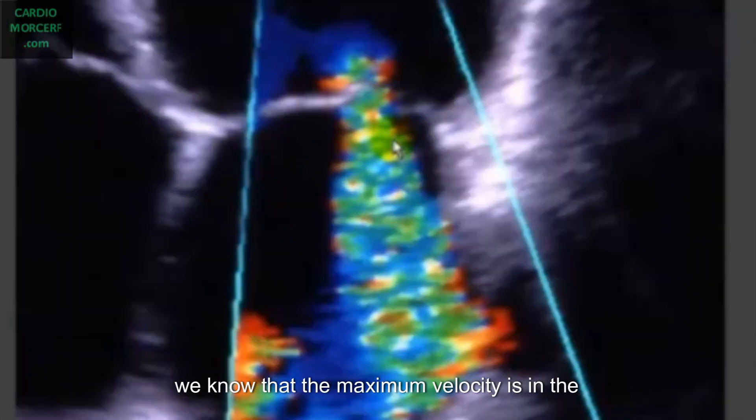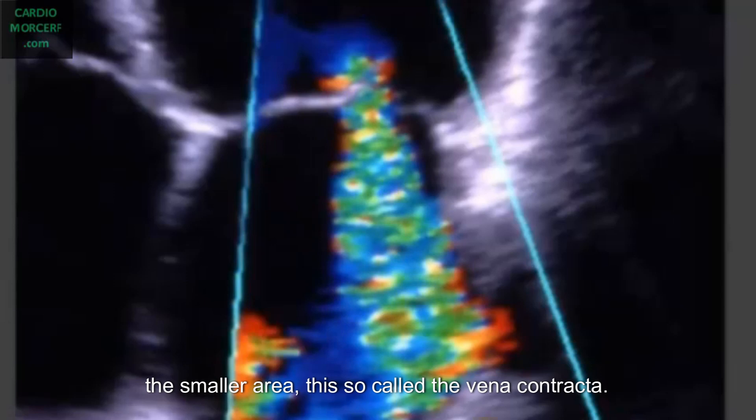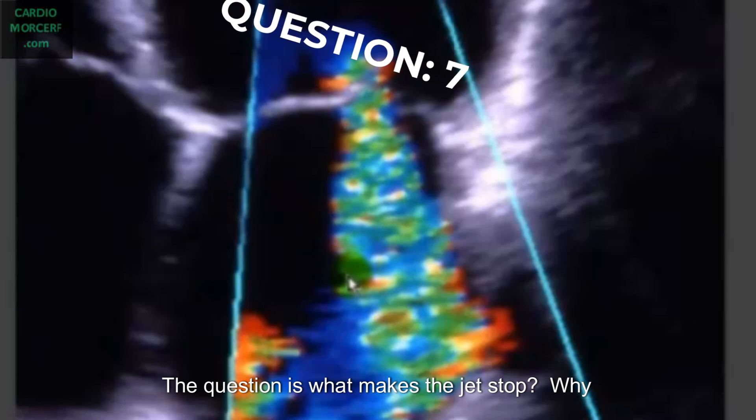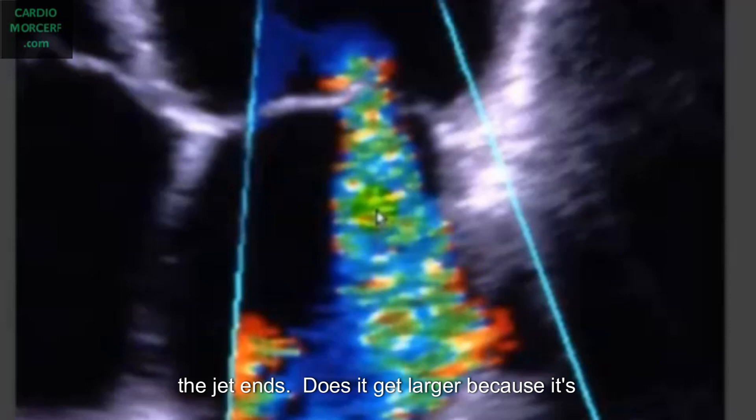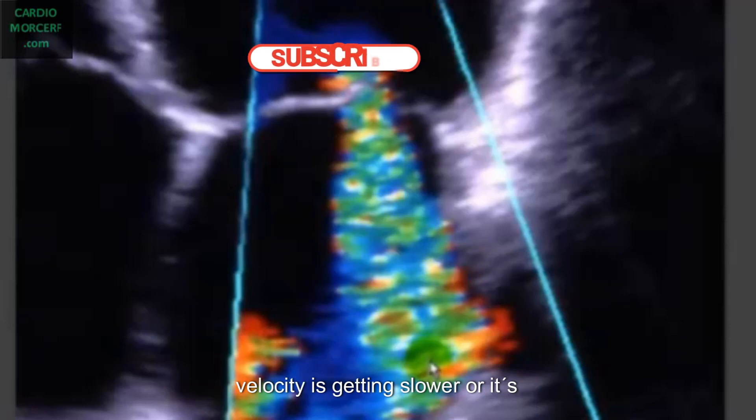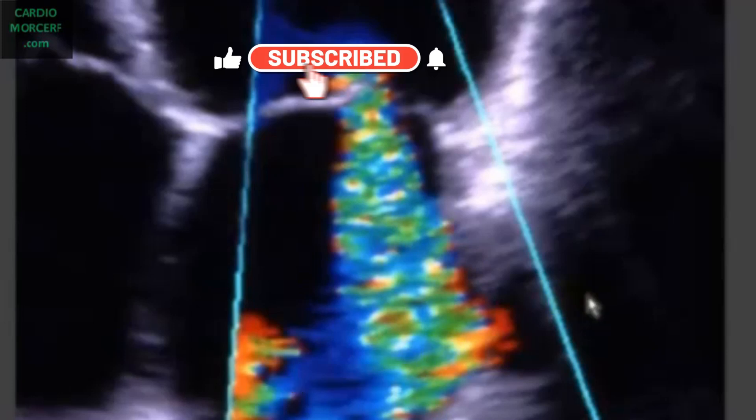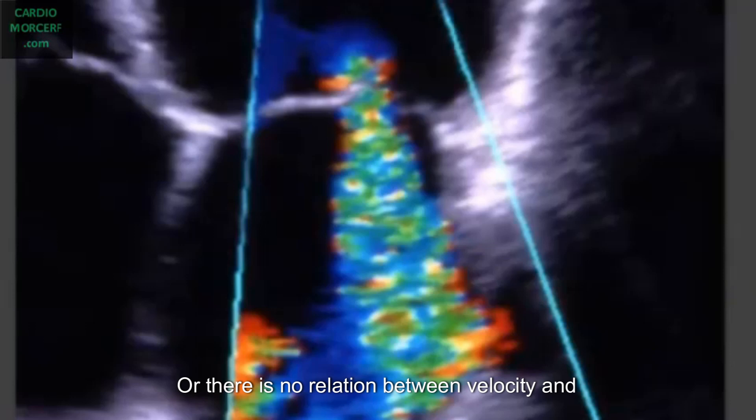Then when we see a jet like the mitral regurgitation, we know that the maximal velocity is in the area of maximal obstruction, where it has the smaller area, the so-called vena contracta. The question is, what makes the jet stop? Why is it getting larger after the obstruction until its velocity returns to normal and the jet ends? Does it get larger because its velocity is getting slower? Or it gets slower because it gets larger? Or there is no relation between velocity and width of the jet.